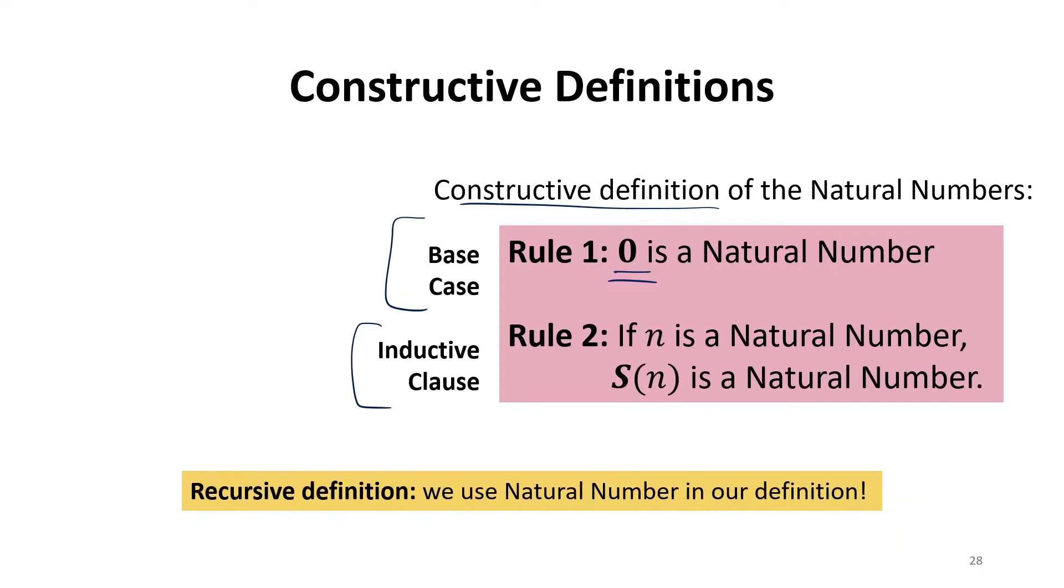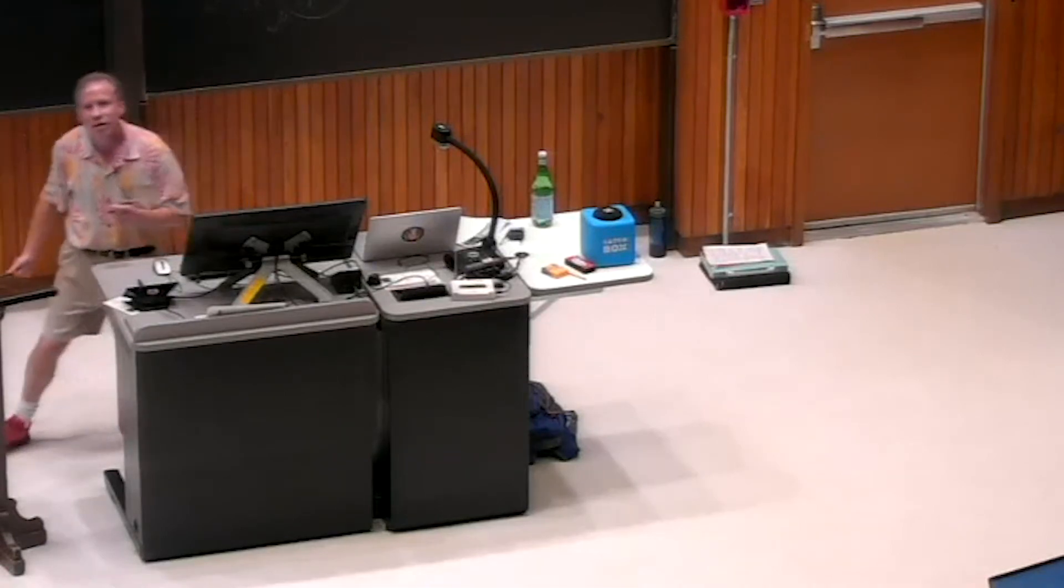So it is precise, right? It tells us we're defining the set of natural numbers as everything we can make using those rules. If we understand those rules, we can answer exactly the question of, given some thing, yes or no, is this a natural number? Right? Whether, if we can construct it with these rules, the answer is yes. If we can't, the answer is no.